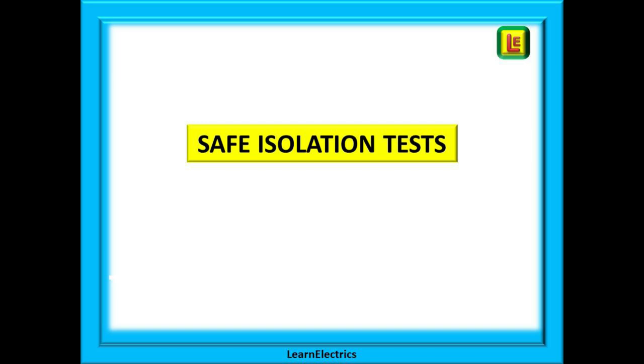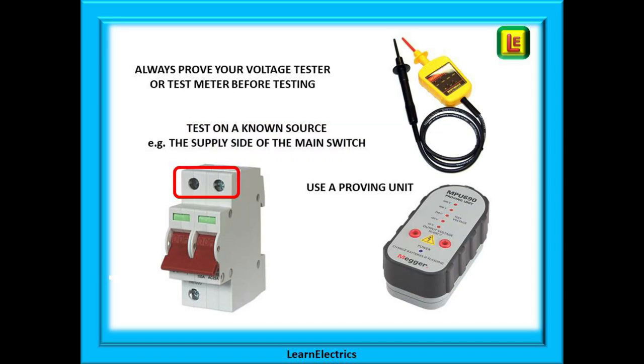We can look now at the safe isolation tests and what it is that we are testing. Make sure they have the correct equipment to test and isolate properly. Always prove that your voltage tester is functioning correctly. This can be done by testing on a known 230 volt source such as the incoming supply terminals at the main switch. We have already said that the supply side will always be energized. Or we can use a proven unit to check the voltage indicator. Whichever method you choose is fine so long as the check is carried out.